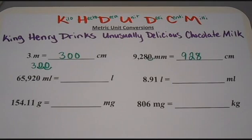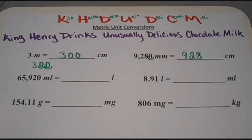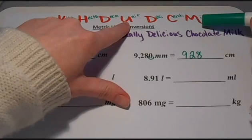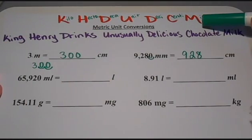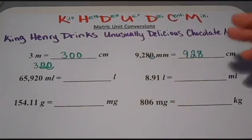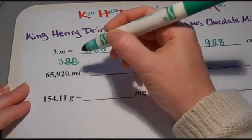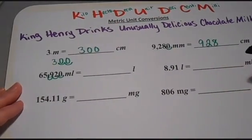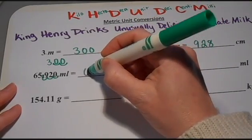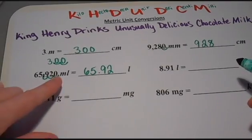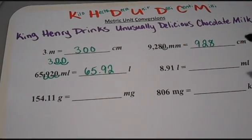It works for the other units as well. Here we have 65,920 milliliters and I need to convert that into liters. Starting with milli and going to liters — my base unit — I count over one, two, three spaces. Since I'm moving to the left, I move my decimal three spaces to the left, and it goes right in between the five and the nine. So this is 65.92 liters — I can leave that extra zero off the end since it's at the end of the decimal.